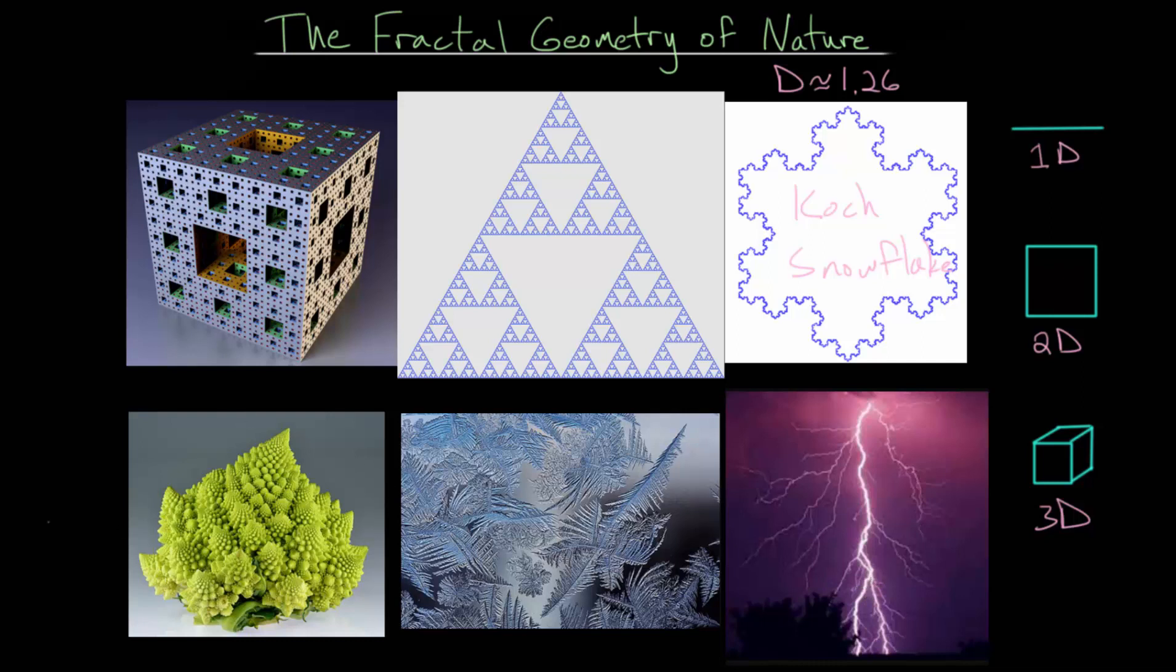And this first picture here, this is an example of Romanesco broccoli, which if you look at the entire shape, you'll notice that as you look at, let's say, one of these heads here, that it looks very similar to the entire shape here. And in fact, if we looked at one of these tiny sections of one of the heads, it would also look like the entire picture. And it demonstrates that self-similarity.